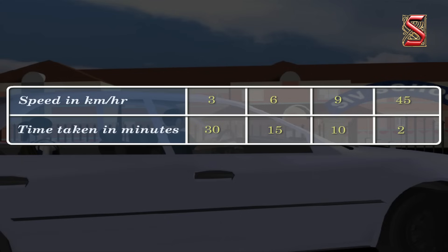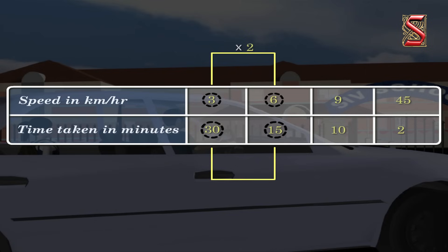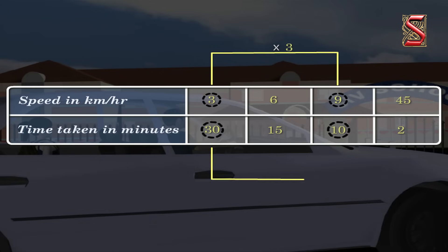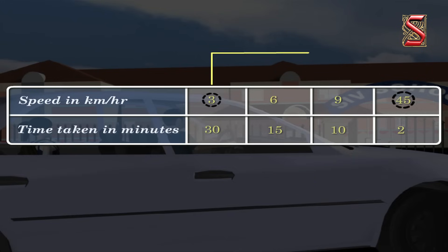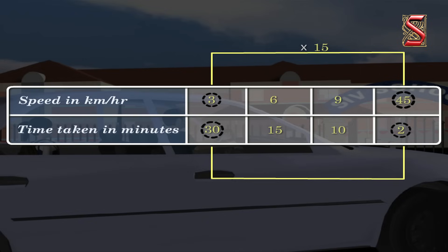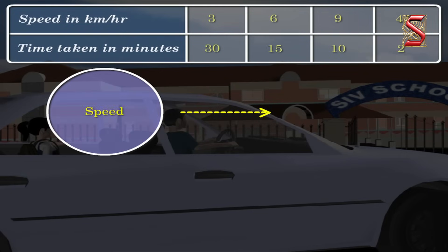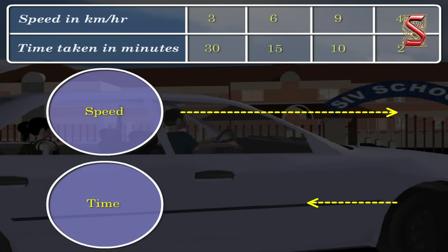We see that when she increased her speed two times the normal speed, the time taken decreases by half. If speed is increased by 3 times, time taken decreases by one third. If speed is increased 15 times, then the time taken is decreased by one fifteenth. As speed increases, time decreases in the same ratio.